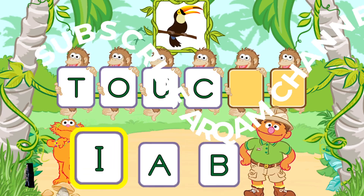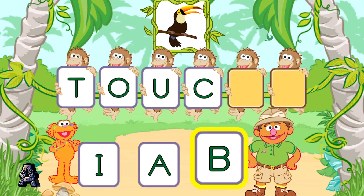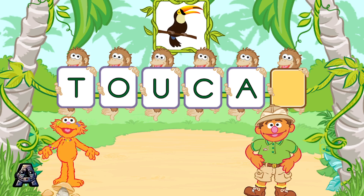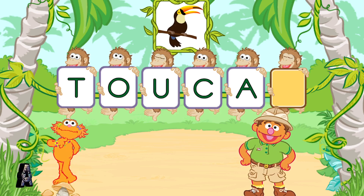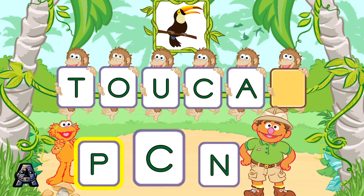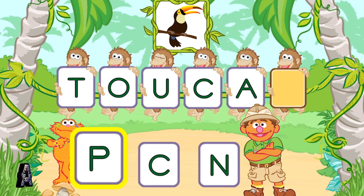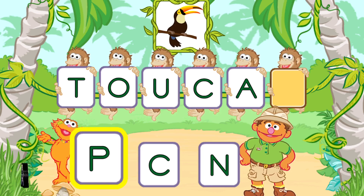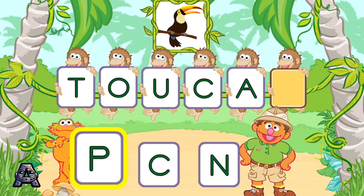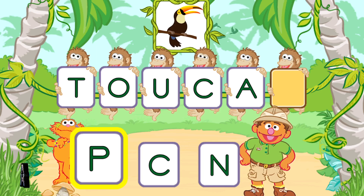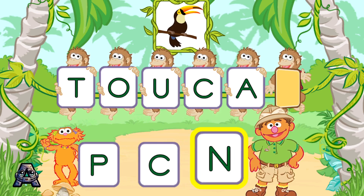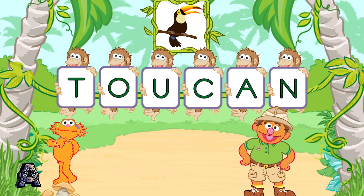Next, pick the letter A. You're so good at this! A is the next letter in the word toucan. Now, pick the letter N. That's not right. P is not the last letter in the word toucan. Try again. Pick the letter N. Remember, pick the letter N. Nice work! N is the last letter in the word toucan.